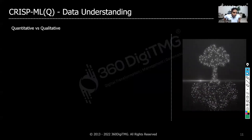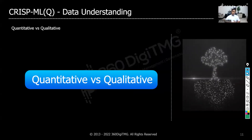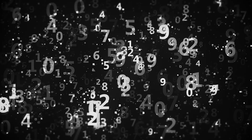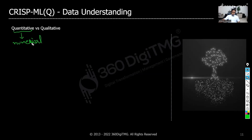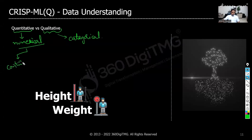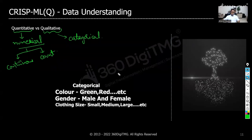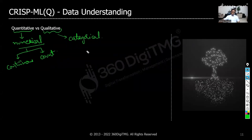What is the difference between quantitative data versus qualitative data? Quantitative data means numbers — any numerical representation or numerical data is called quantitative data. Qualitative data is categorical data. Continuous data and count data would be numerical in format, while categorical data would be non-numerical — it would be qualitative.